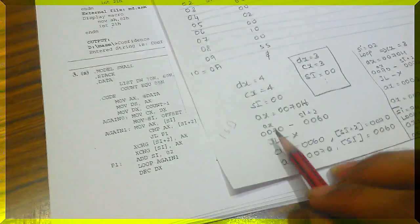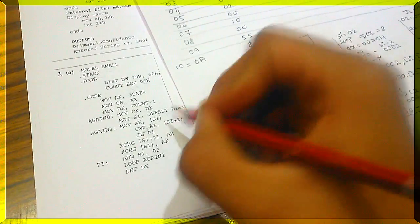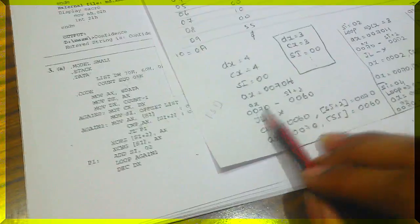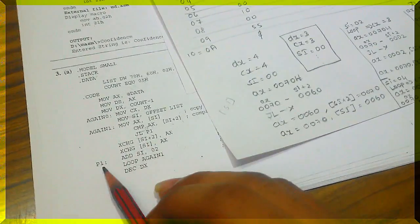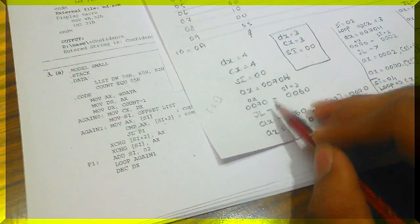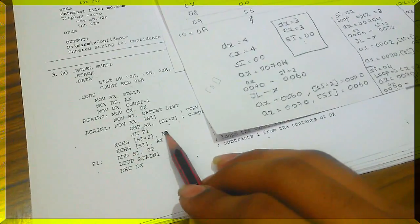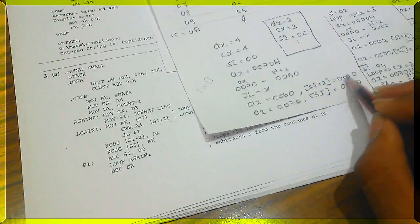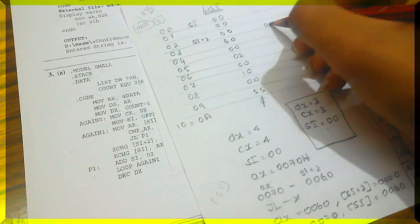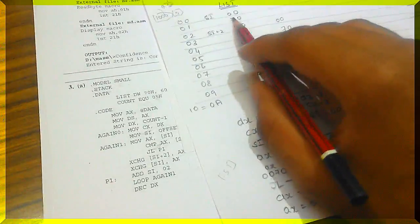JL means Jump if Less. It checks the destination (AX) — if AX is lesser it jumps to label P1. Here AX is 0070H which is greater than 0060H, so JL won't execute and we proceed to XCHG. The XCHG instruction exchanges AX with [SI+2]: AX had 0070H and [SI+2] had 0060H, so after exchange [SI+2] becomes 0070H and AX becomes 0060H.